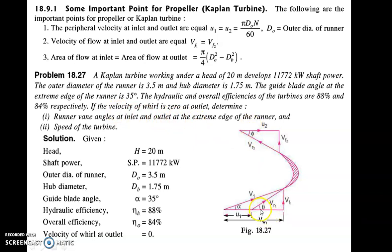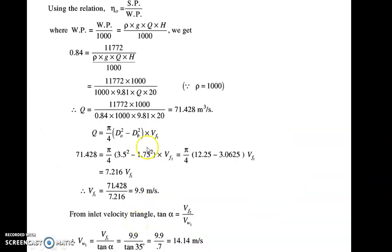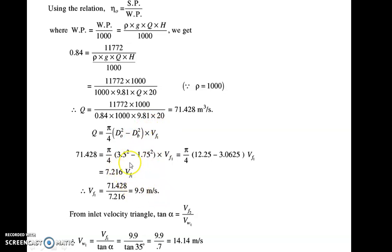To find theta, you need Vf1, Vw1, and u1. Overall efficiency equals shaft power upon water power, which is rho·g·Q·H. With H given, Q can be calculated as 71.428 cubic meters per second. Once you calculate Q, using Q equals pi by 4 into (do squared minus db squared) into Vf1, with do and db known, you can calculate Vf1, which comes out as 9.9 meters per second.